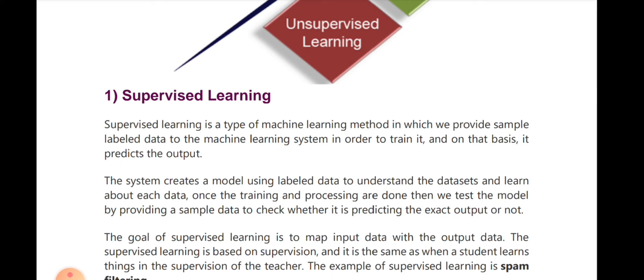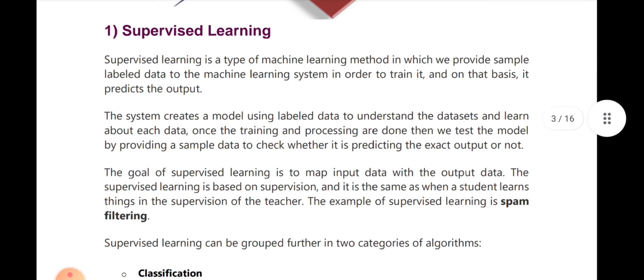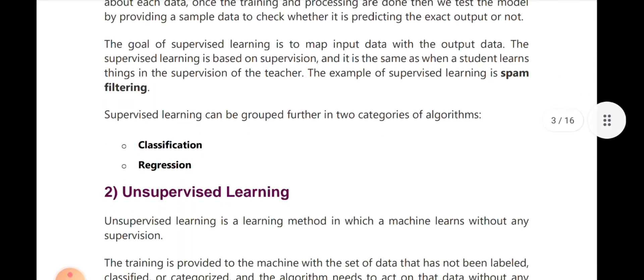We understand the dataset and learn about each data point. Once the training and processing are done, we test the model by providing sample data to check whether it predicts the correct output or not. We give pictures of animals with their features, and then the model detects and classifies new animals. Then we have classification and regression.